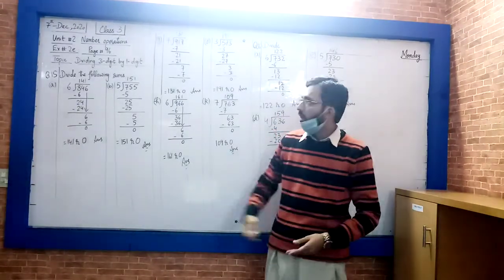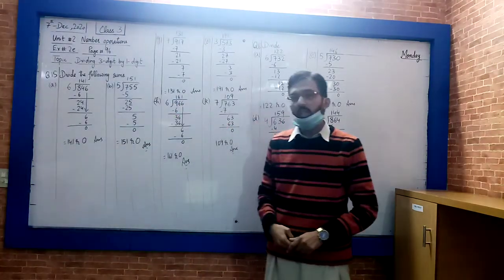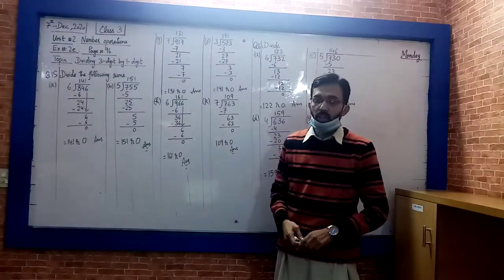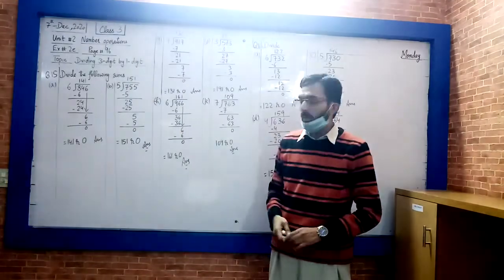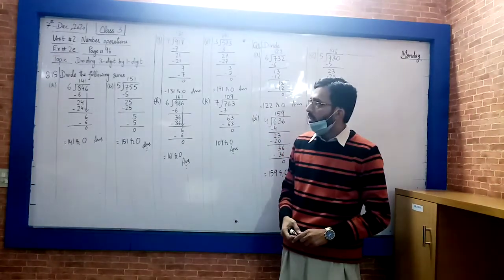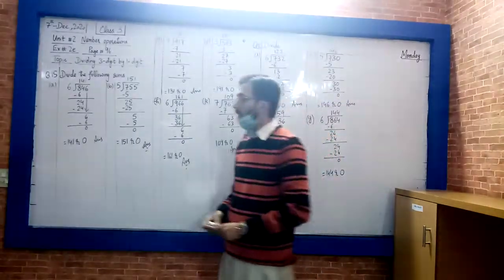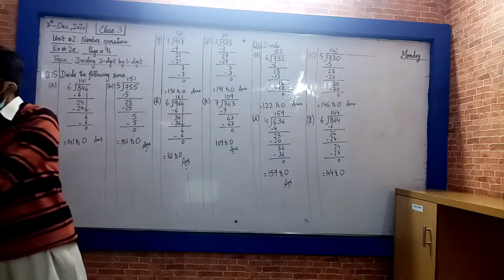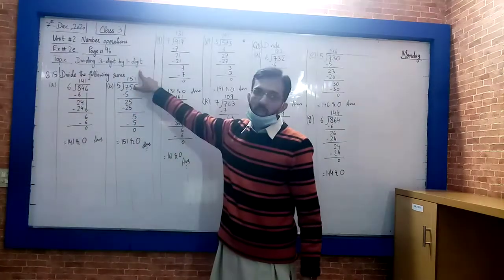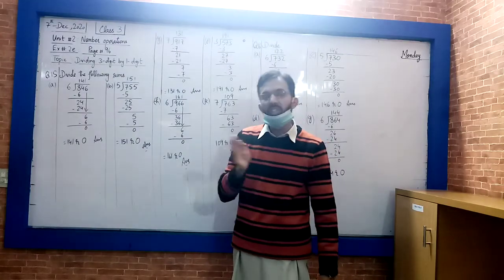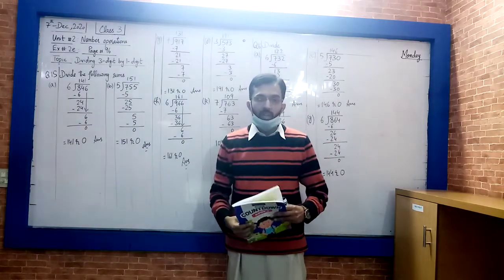Today we will do unit number 2, exercise number 2E, and the page is number 96. Today's topic is dividing 3-digit numbers by 1-digit numbers.